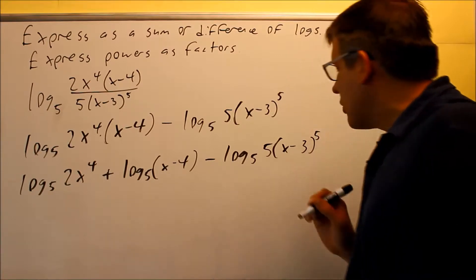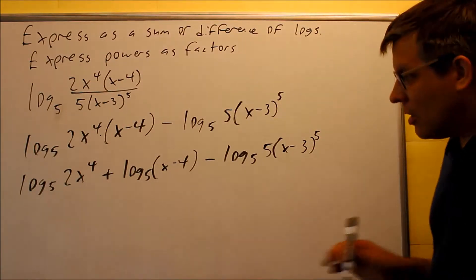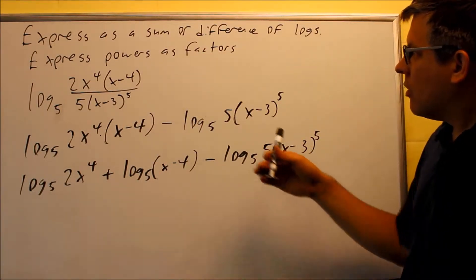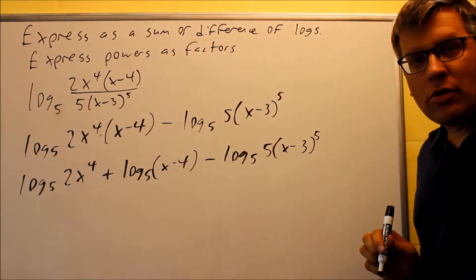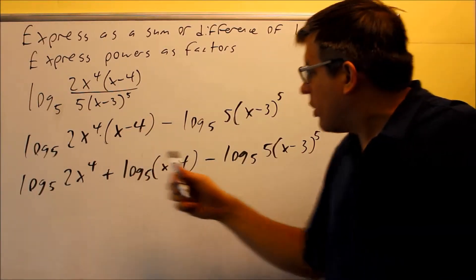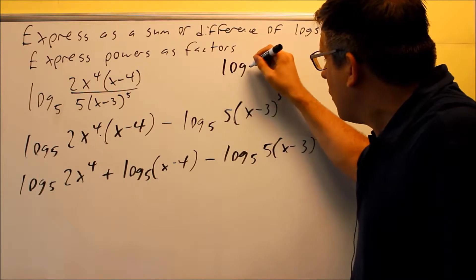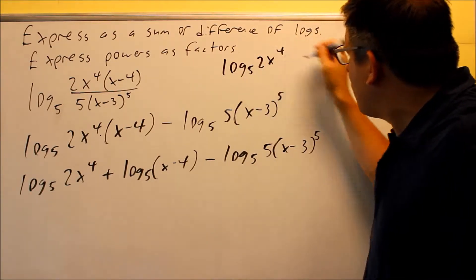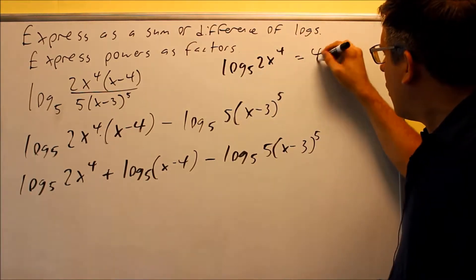Now, one thing I want to point out here, and this is a mistake that I often see, when we get to the part about expressing the powers as factors. So a lot of people, what they'll do is they'll take log base 5 of 2x to the 4th power, they'll bring the 4 down, and they'll have that as the answer.